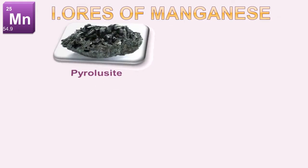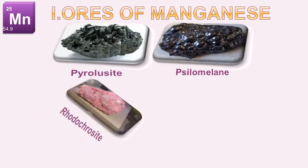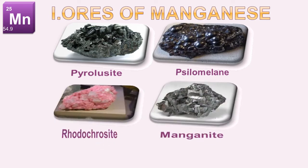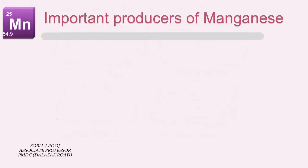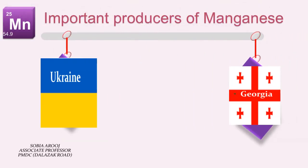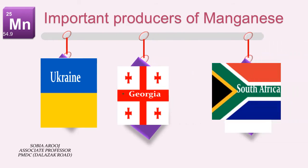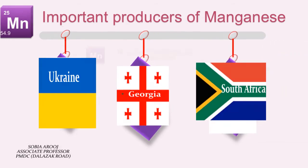Ores of manganese include pyrolusite, which is magnetic in nature, selenomene, rhodochrosite, and manganite. Important producers of manganese are Ukraine, Georgia, and South Africa.